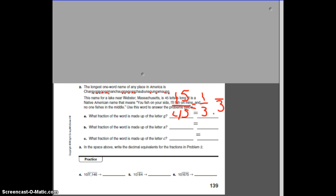Alright, our next one is asking, what fraction of the word is made up of the letter A? Keep that same denominator, 45. But this time, count your A's. How many of them are A's? Let's see. 1, 2, 3, 4, 5, 6, 7, 8, 9. I got 9.